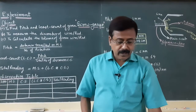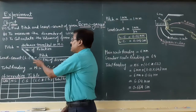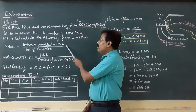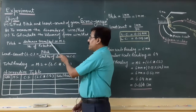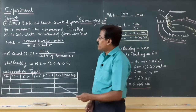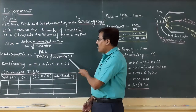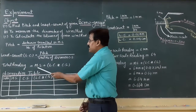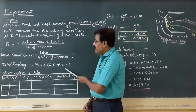Before the actual experimental explanation, understand the formulas. Pitch is the distance travelled by the circular scale on the main scale divided by the number of rotations. Least count is the ratio of pitch to the total number of divisions on the circular scale. The total reading is the sum of the main scale reading plus the product of least count and the circular scale reading.